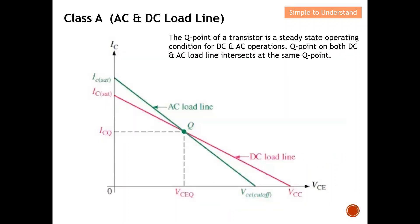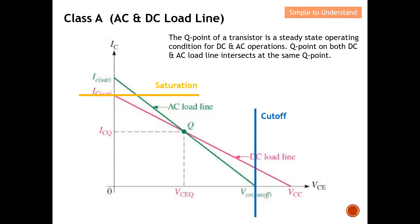Let's understand what the AC and DC load lines actually are. In this diagram you can see both the AC load line, shown in green, and the DC load line, shown in red. The Q point of a transistor is the steady-state operating condition for both DC and AC operation. The Q point on both the DC and AC load lines intersect at the same common Q point, as you can see here at the middle of the diagram.